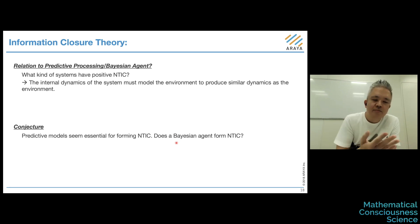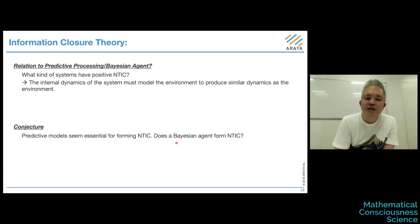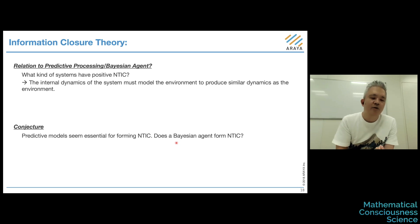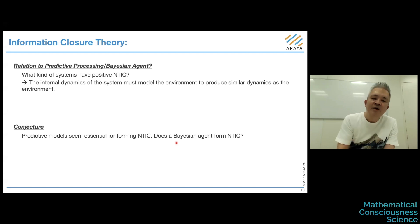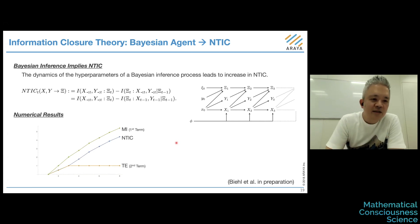Next I want to ask how NTIC is related to inference. As I said, the internal dynamics need to become like the environment to increase NTIC, so it needs to learn the dynamics of the environment. This suggests that if we create a Bayesian agent or any agent that learns to predict the next step, they may form NTIC. To test this idea, we are considering a very simple system.